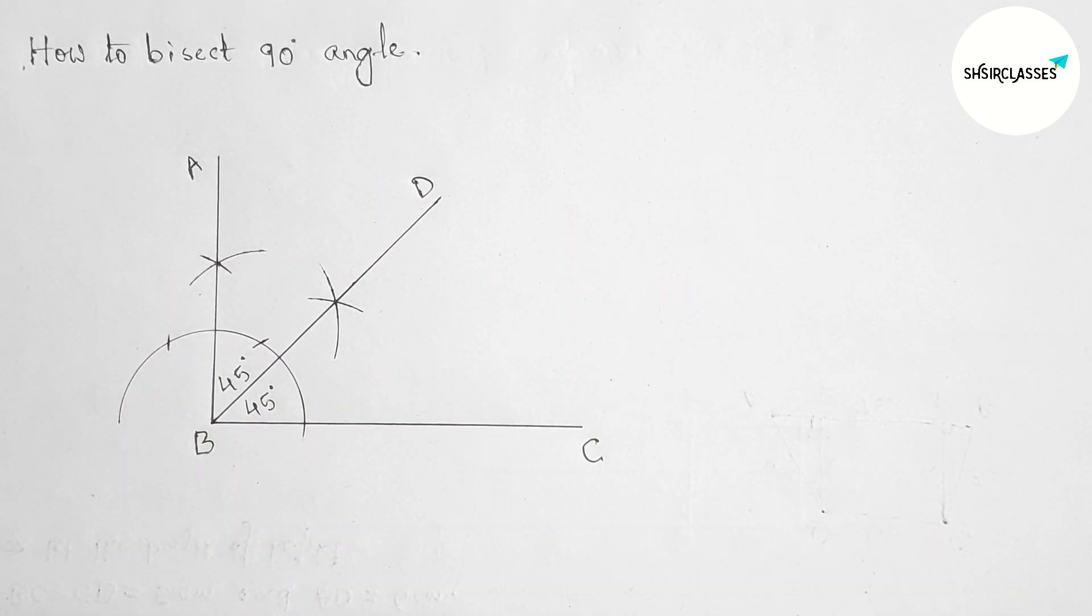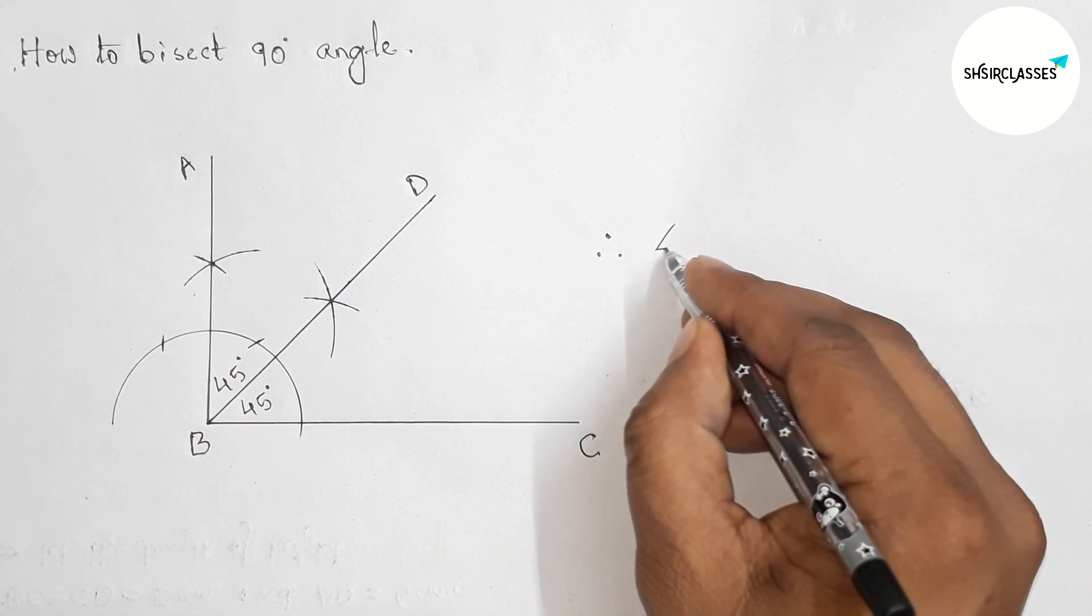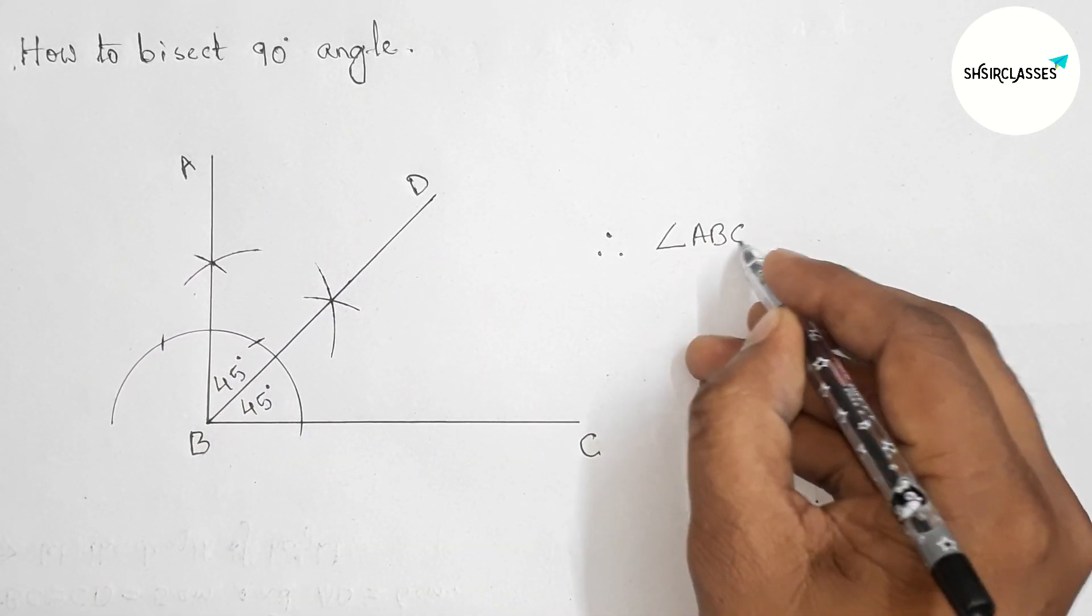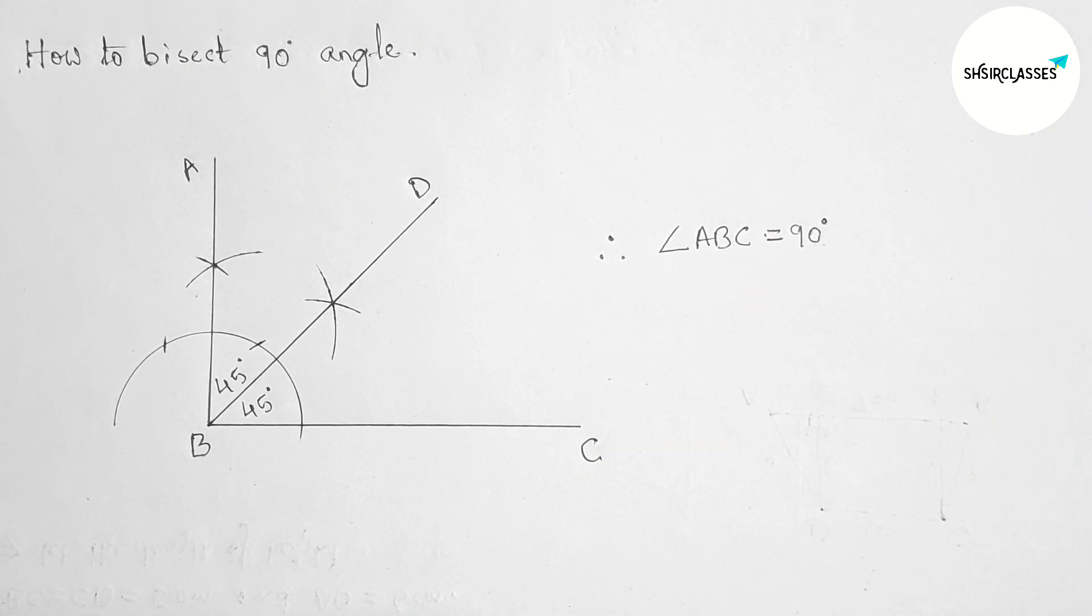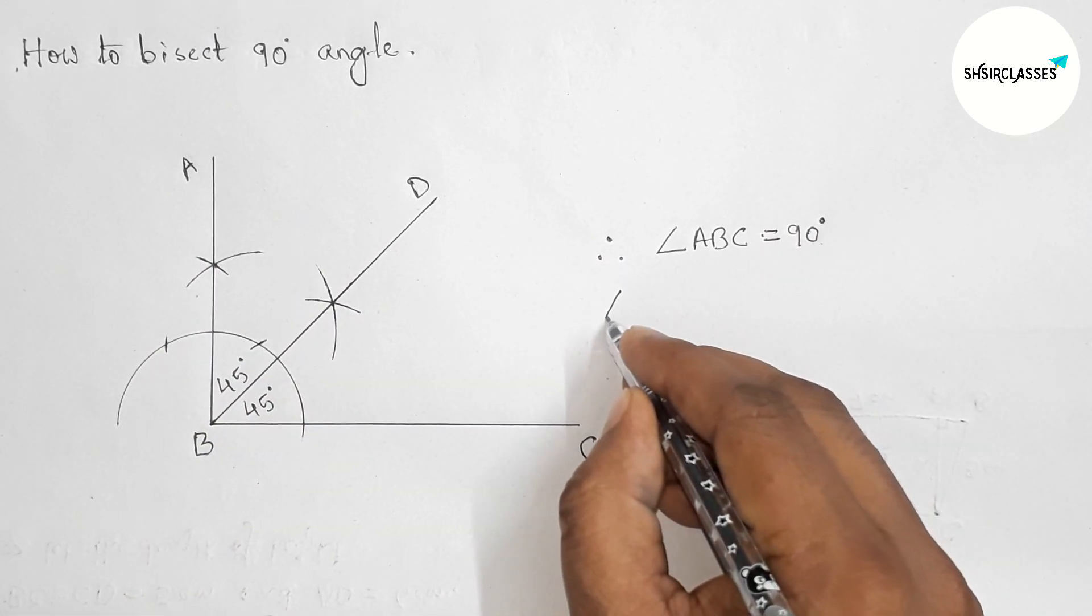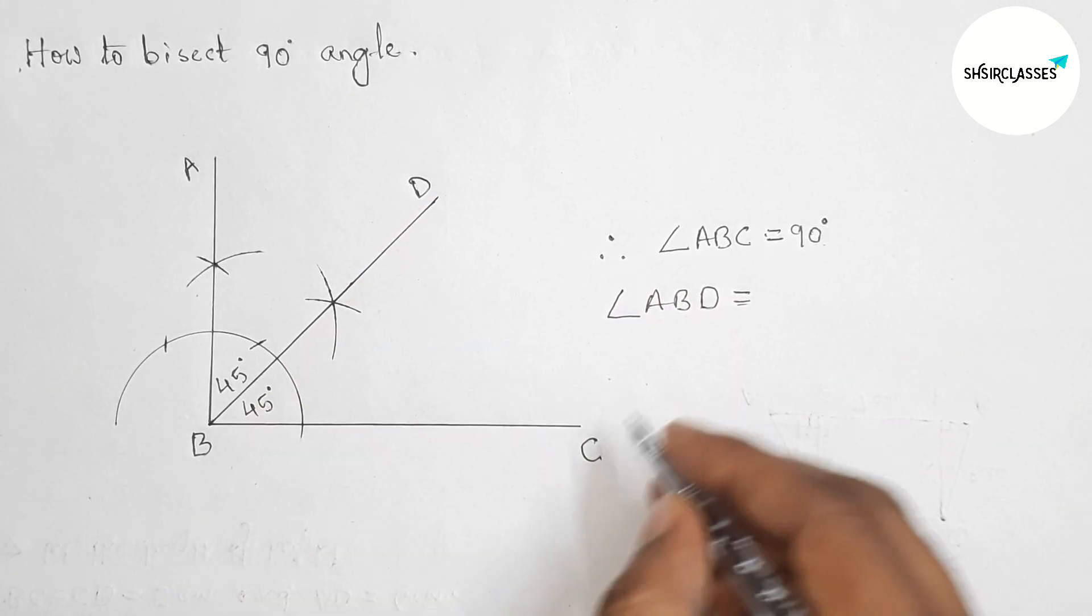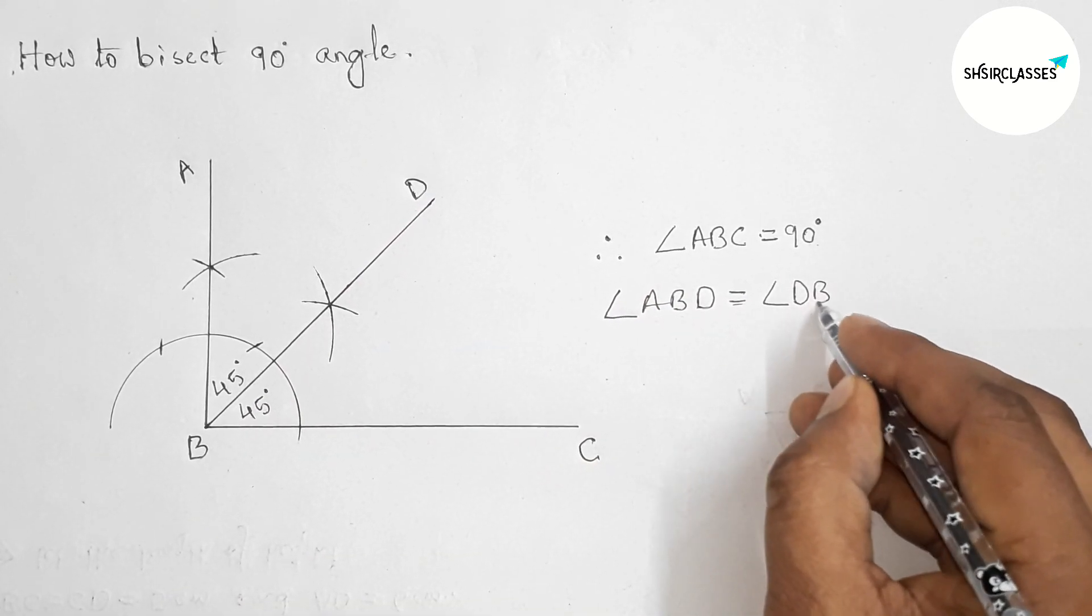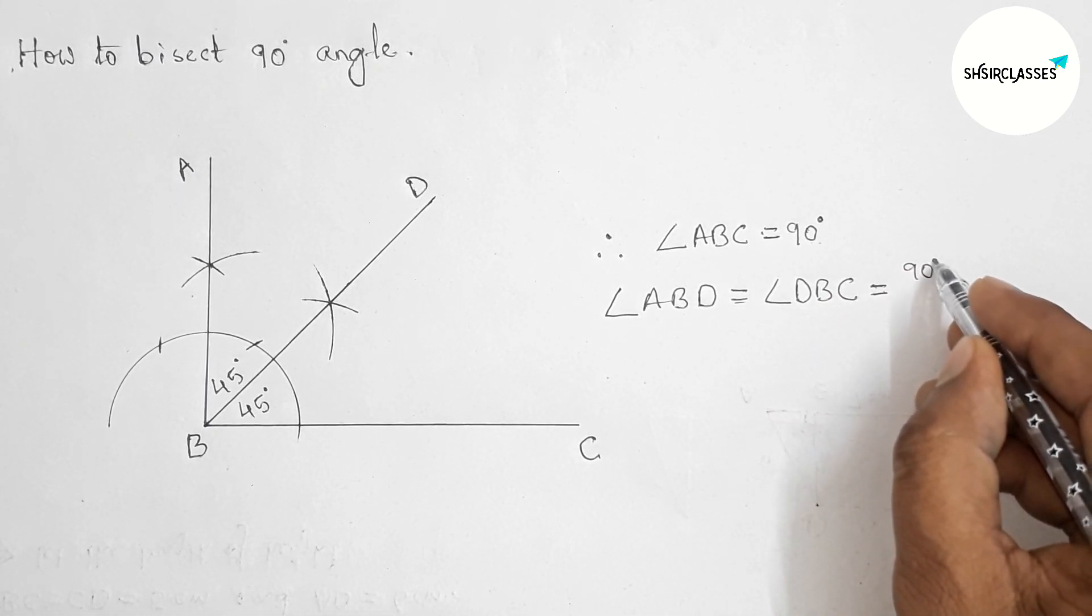By this way you can bisect a 90-degree angle with the use of compass and pencil. Here angle ABC is 90 degrees. Now the value of angle ABD is equal to angle DBC. Both are equal, so dividing by 2: 90 degrees divided by 2 is 45 degrees.